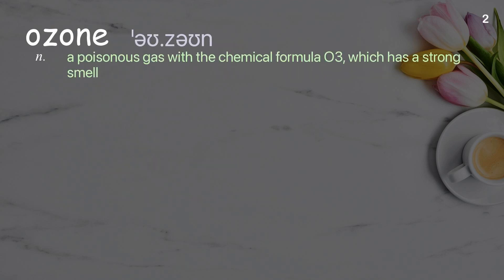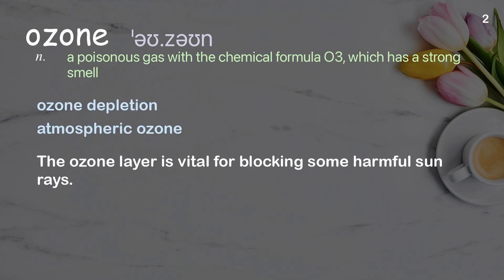Ozone: a poisonous gas with the chemical formula O3 which has a strong smell. Examples: ozone depletion, atmospheric ozone. The ozone layer is vital for blocking some harmful sun rays.